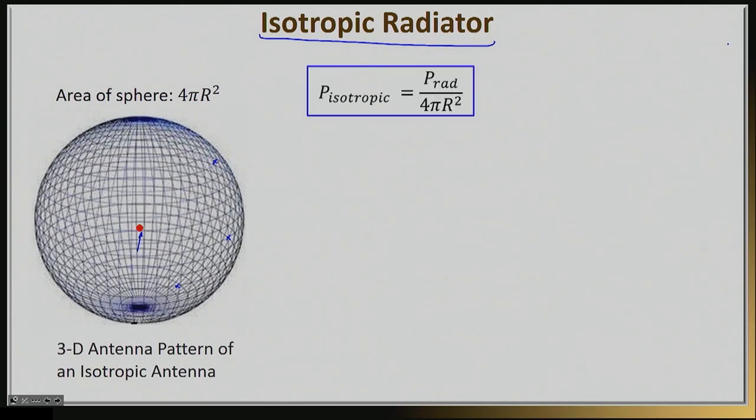It has absolutely no preference in terms of direction, and if you feed it with some type of input power, let's say one watt, it will take this power and spread it to so many watts per meter square on the surface of a sphere.